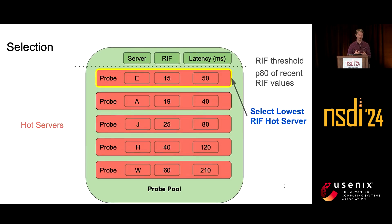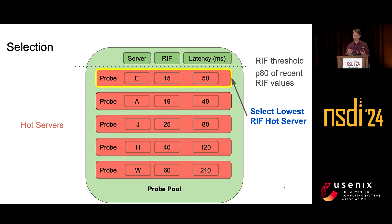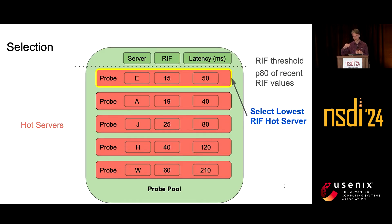If all probes in the pool happen to be hot servers — because the pool is limited, say 16 entries — we'll pick the one with the lowest requests in flight. That protects the system from overloading, by not adding additional requests in flight to heavily loaded servers.